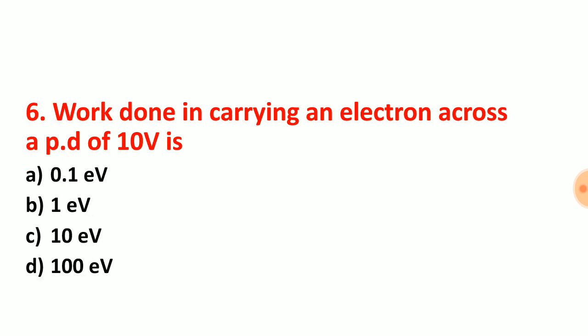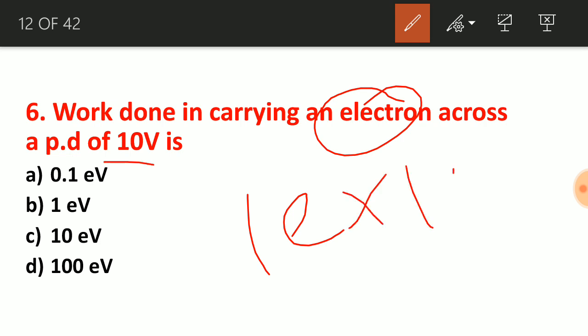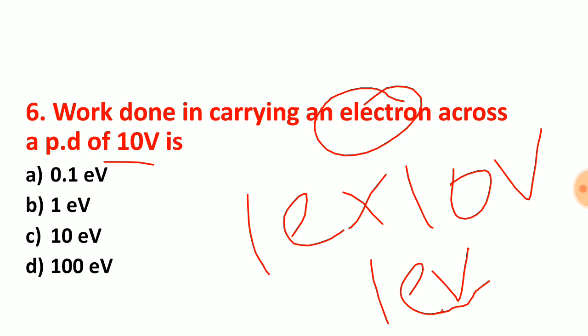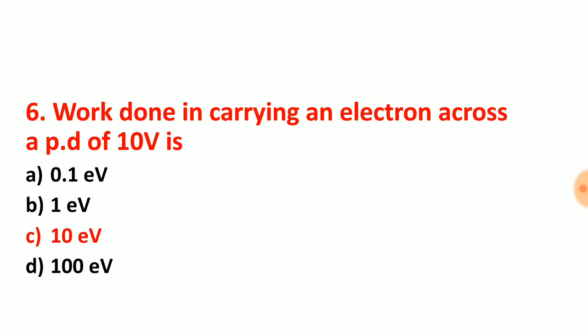Question number 6: work done in carrying an electron across a potential difference of 10 volt. Here an electron has charge 1E. The electron volt is a unit of work done or energy. 1 electron volt is equal to 1.6 × 10⁻¹⁹ joule. So for this question, 10 electron volts is the right answer, that is option choice C.